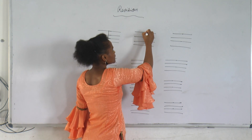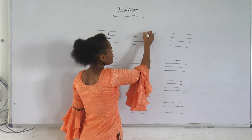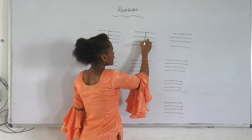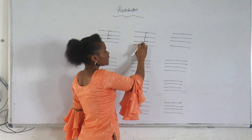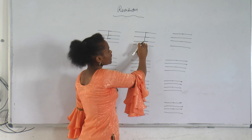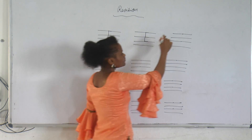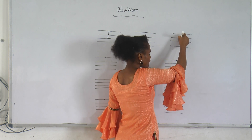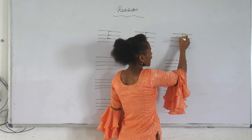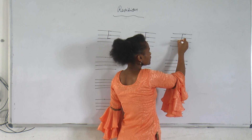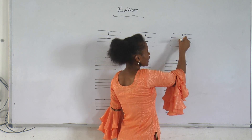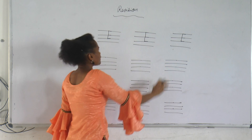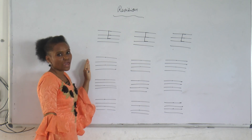Once again: standing line, sleeping line, sleeping line, sleeping line. E. E for elephant. Once again I am showing: standing line, sleeping line, sleeping line, sleeping line. E. E for egg.